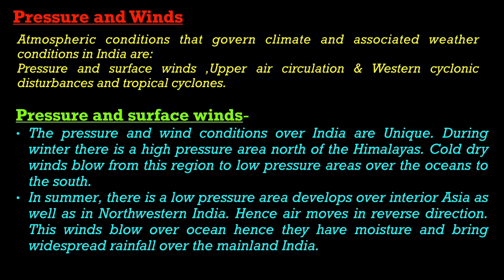Pressure and Winds — there are three components: Pressure and Surface Winds, Upper Air Circulation, and Western Cyclonic Disturbances and Tropical Cyclones. Regarding pressure and surface winds: during winters, there is a high pressure area north of the Himalayas, and cold dry winds flow from this region to the low pressure areas over the oceans to the south. In summer, the condition reverses — a low pressure area develops over interior Asia and northwestern India, so air moves from south to north, from oceans to mainland India, bringing widespread rainfall — termed as monsoon.